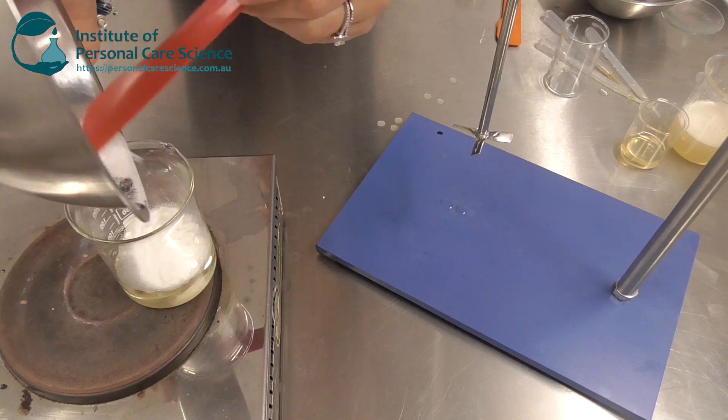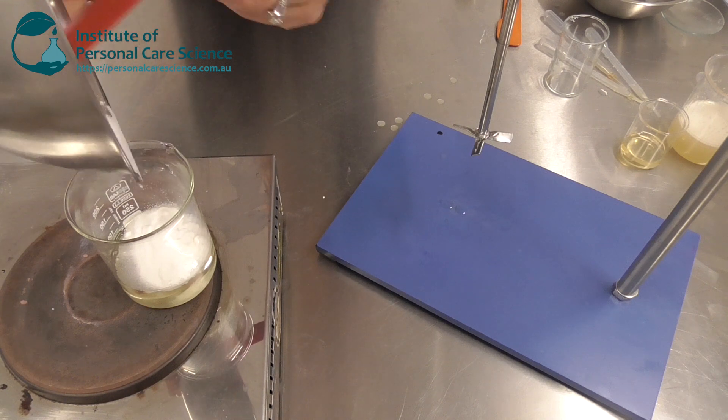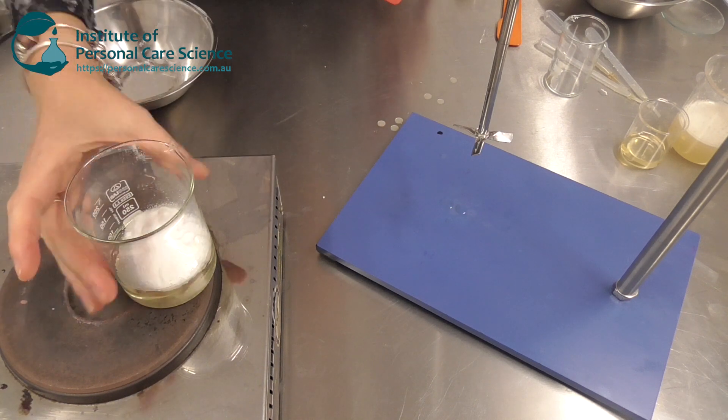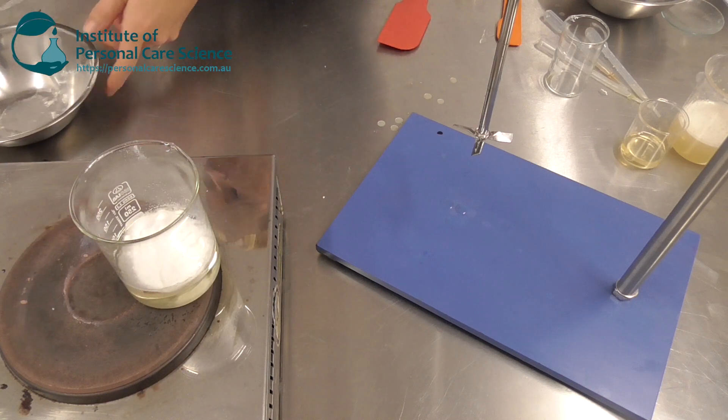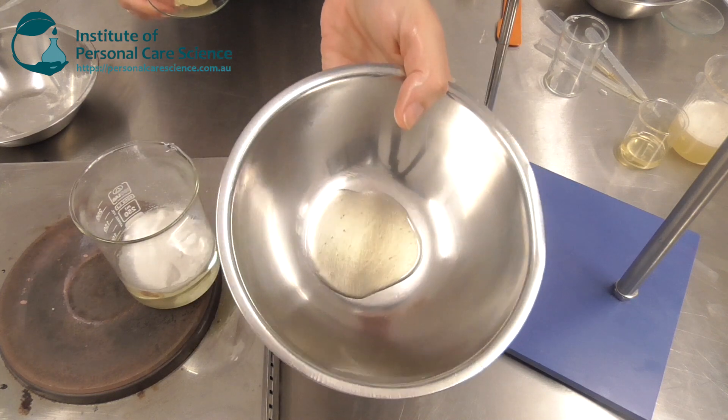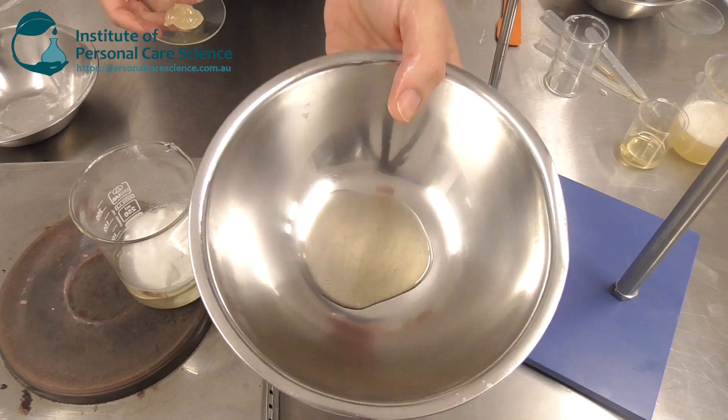Again similar concept, we need to form an inverse solubilized mixture. So while that is heating to melt, I have over here again my liquid low HLB emulsifier, the Arlacel 1689.